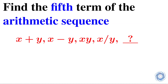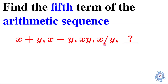Hello everyone, welcome to the family of atomic mathematics. In this video we will solve a problem from algebra. The question is: find the fifth term of the arithmetic sequence given by x plus y, x minus y, xy, and x over y. The first four terms of the sequence are given and we have to find the fifth term.